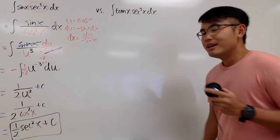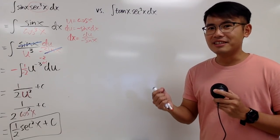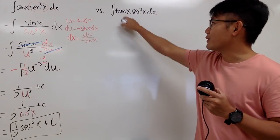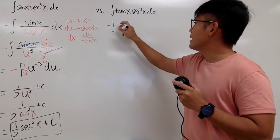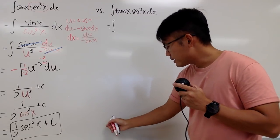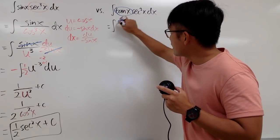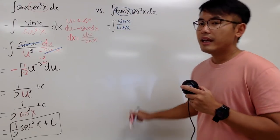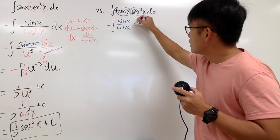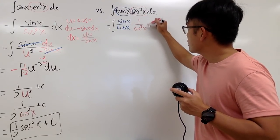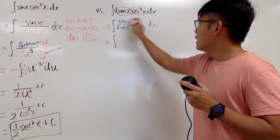Now let's look at the second integral. I don't have sine x — I have tangent x — but that's okay because tangent equals sine x over cosine x. So I'll rewrite tangent x as sine x over cosine x, and the secant cubed x becomes 1 over cosine to the third power x.